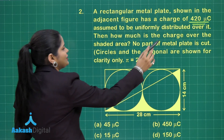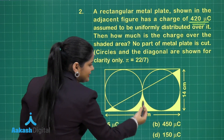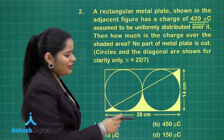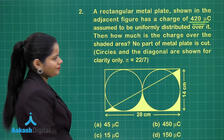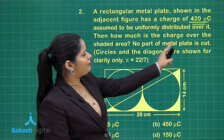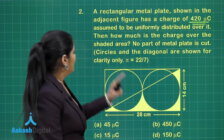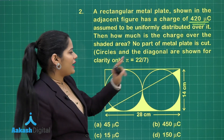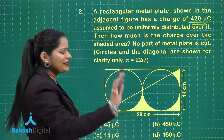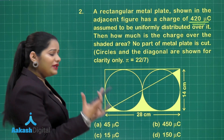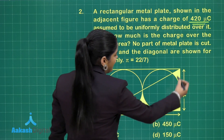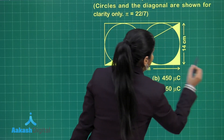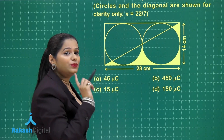How much charge is over the shaded area? You can clearly see in the figure that this is the shaded area — we need to find out the charge in this shaded region. The question also states no part of the metal plate is cut; the circles and diagonals are shown for clarity only, and the value of pi is 22/7. To find the charge in the shaded area, first we need to find the charge per unit area.